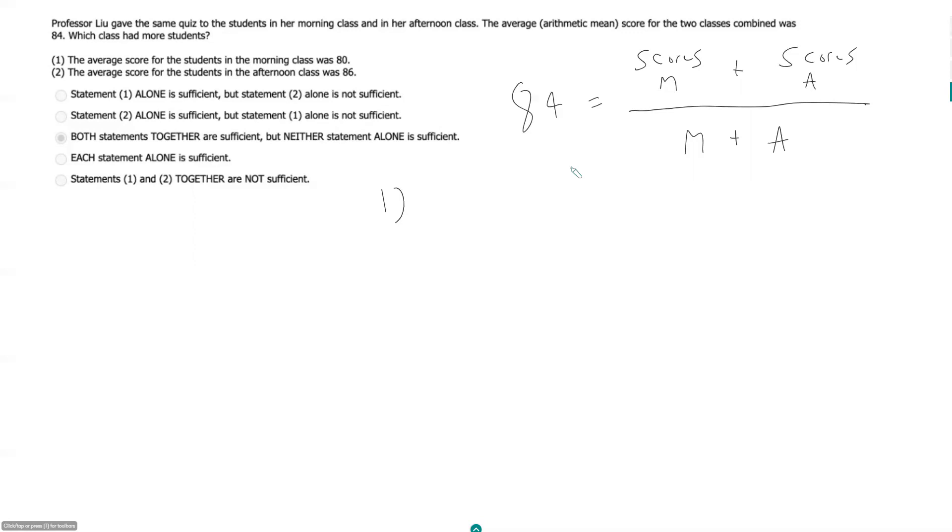So if the average score in the morning class was 80, we can sort of say this is going to be insufficient just because it doesn't tell us anything about the afternoon class.